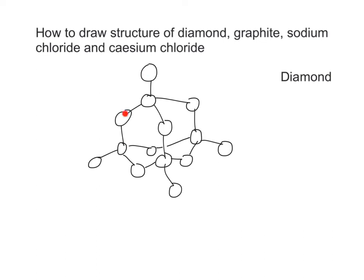One, two, three, four, five, six, seven, eight, nine, ten, eleven, twelve, thirteen, fourteen. Of course, you must include a key in your drawing. Each circle represents a carbon atom.